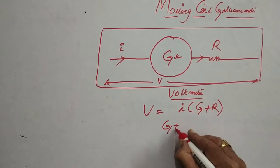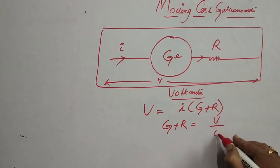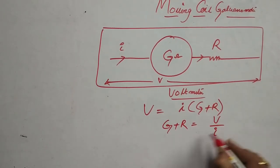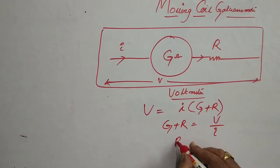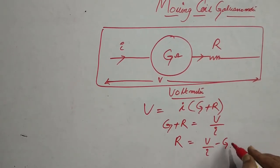G plus R is equal to V by I, or R is equal to V by I minus G.